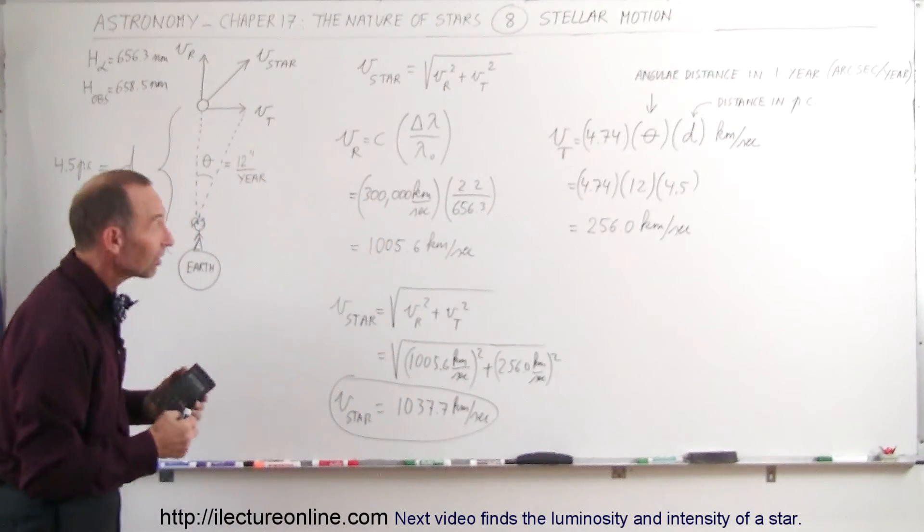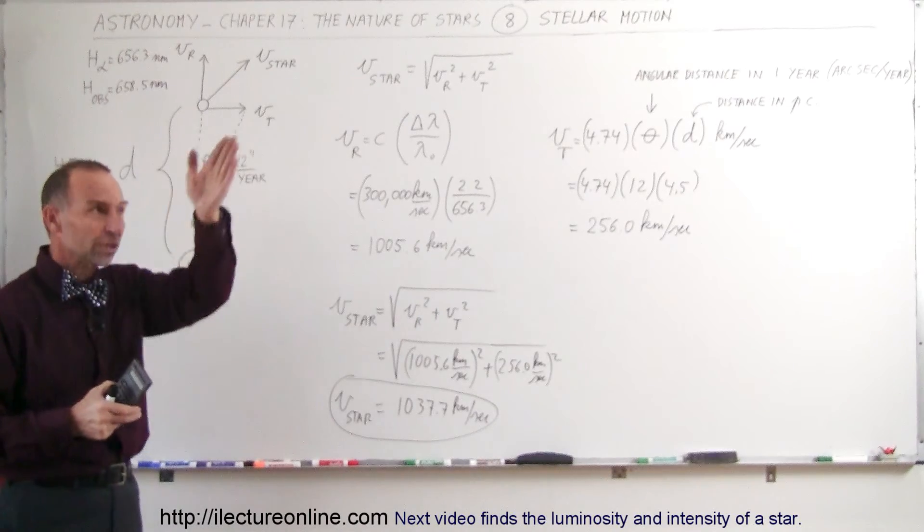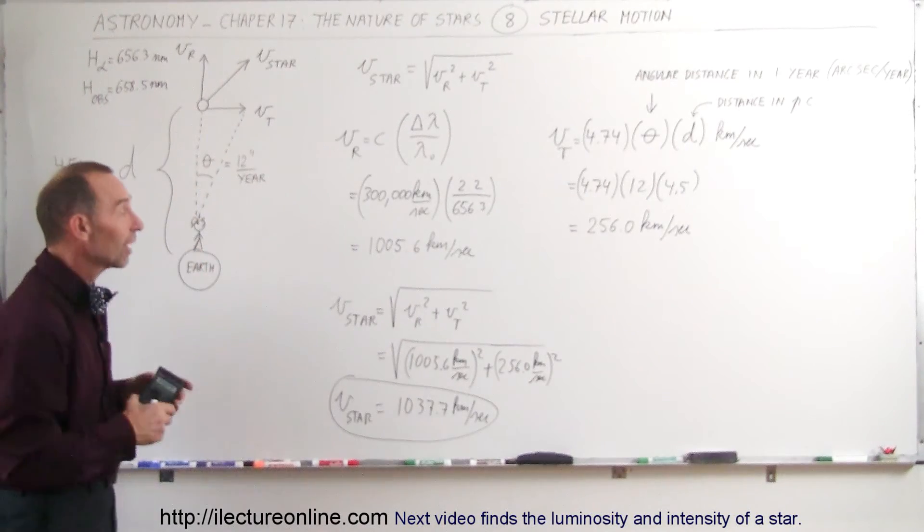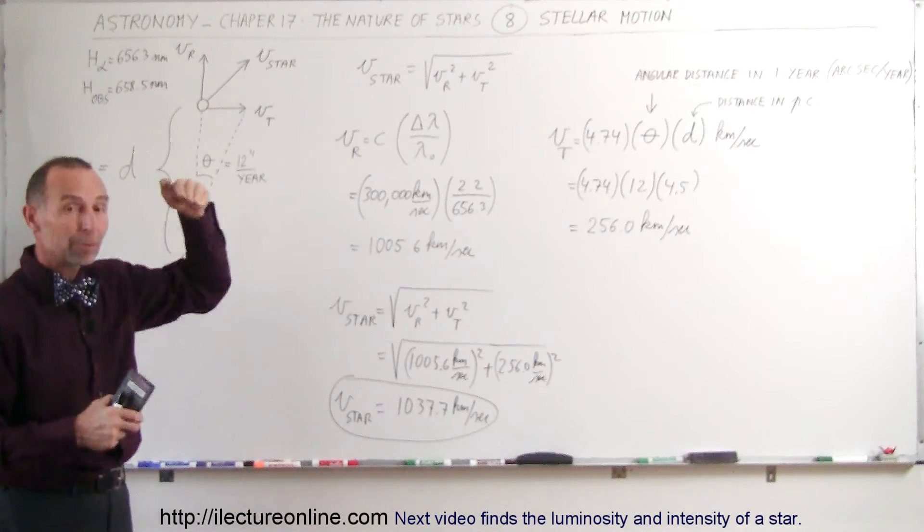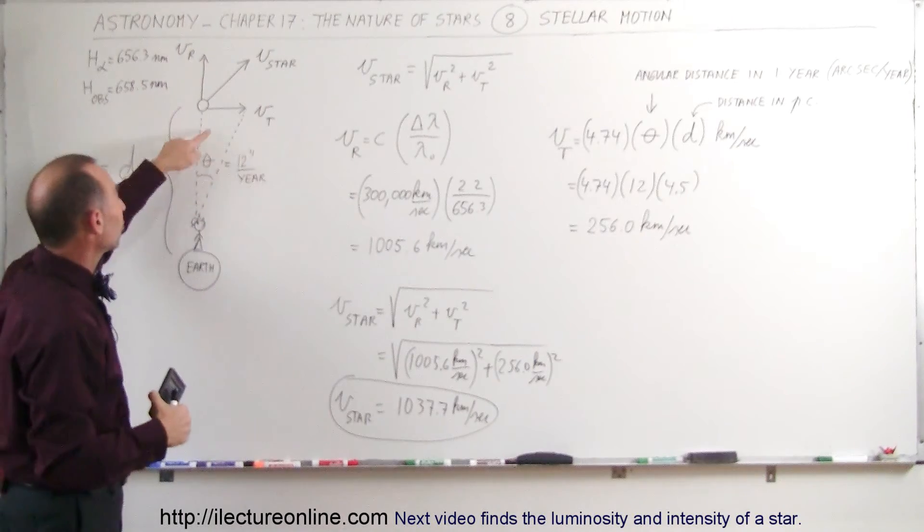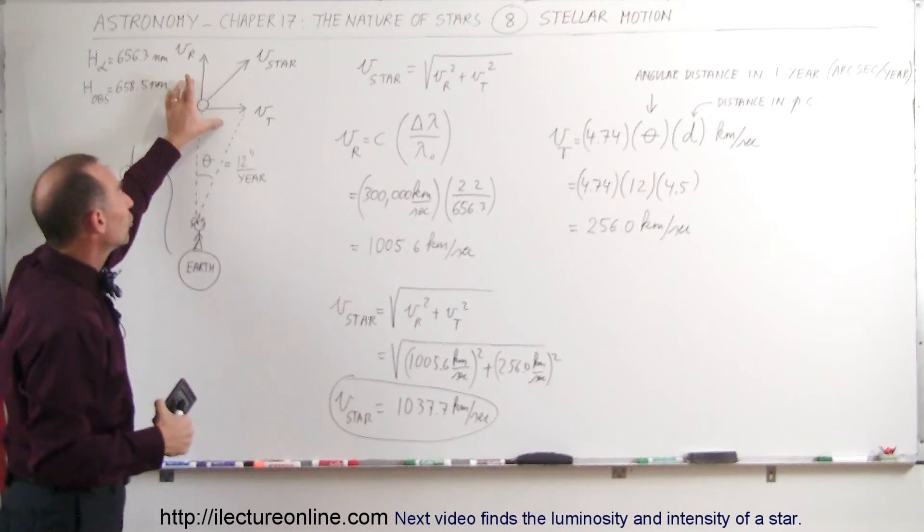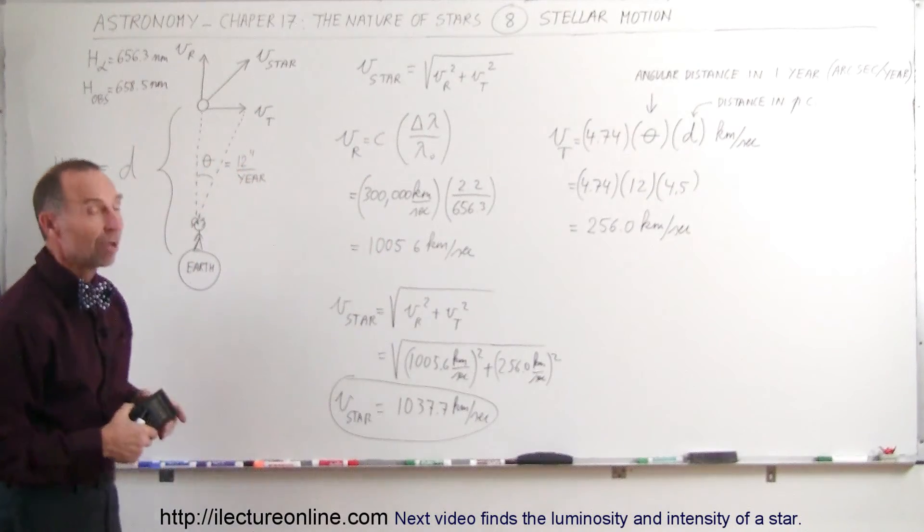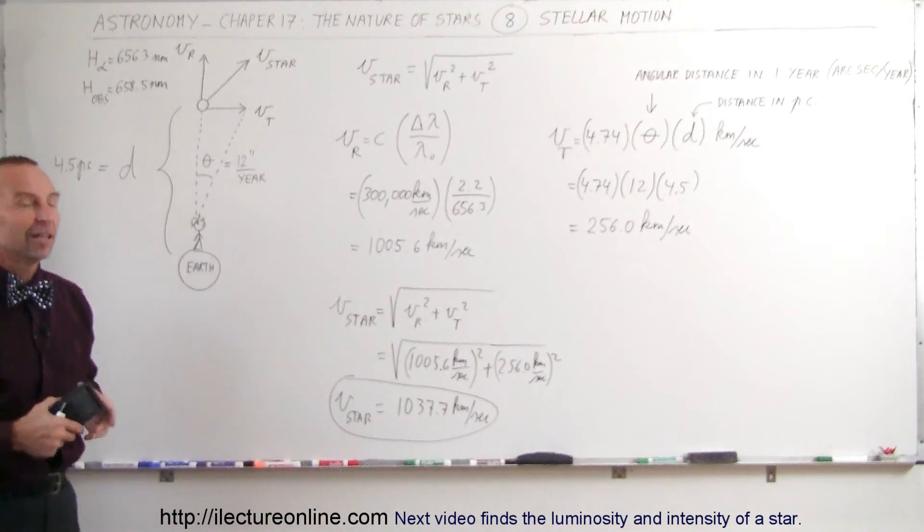So any velocity of any object in space, there's a component that is directly in line, or line of sight, which is called the radial velocity, and then there'll be a component perpendicular to that. It could be like this or like that. It's always perpendicular to us. We can measure that angle, and then we combine the two velocities vectorially like this using Pythagorean theorem, and that's how we find the velocity of any object in the universe.